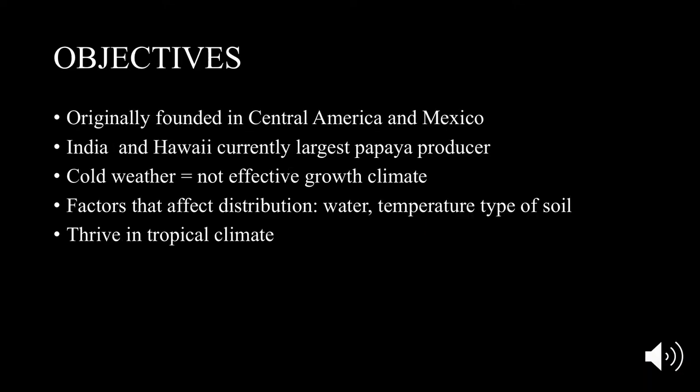The plant originally comes from Central America and Mexico. However, India and Hawaii are currently the largest producers of papaya. Cold climates are not effective growth conditions for the fruit. Other factors that may affect distribution include water availability, temperature, and type of soil. The papaya is known to thrive more in tropical conditions.